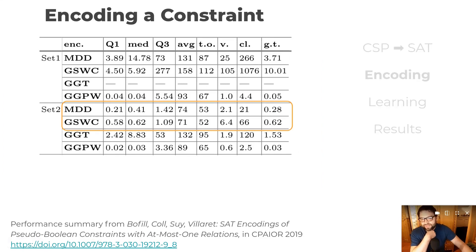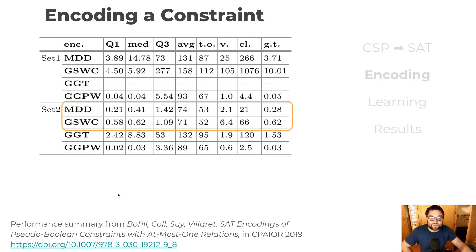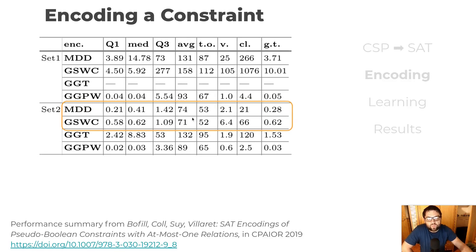That encoding is just one example. There are lots of others, and encodings have different properties that we're interested in. A small size could be desirable, but also the propagation properties might be interesting. In this paper, there are four state-of-the-art encodings described and tested. For example, the MDD encoding uses 2,100 variables and 21,000 clauses, whereas the GSWC uses three times as many variables and clauses. But when it comes to running times, the GSWC is actually three seconds faster on average. So it's not a trivial choice.